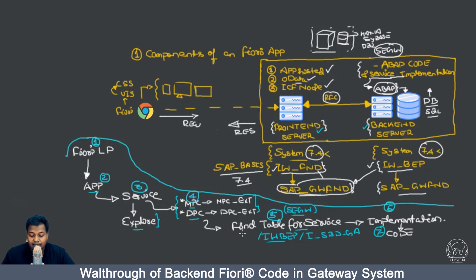We will find the project name in SEGW, then go to SEGW and see the implementation classes and try to see the code. This will be the total flow and we are going to do it in our system. Let's get started and perform the activity starting with our Fiori launchpad.